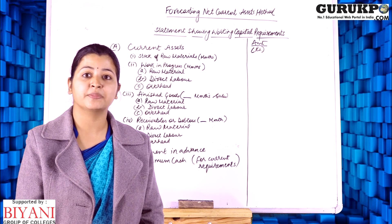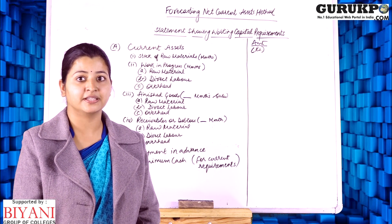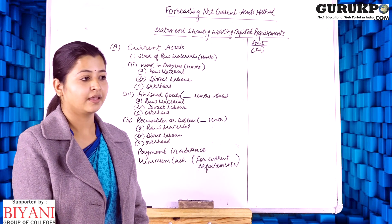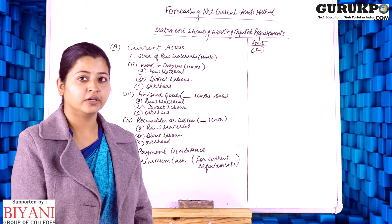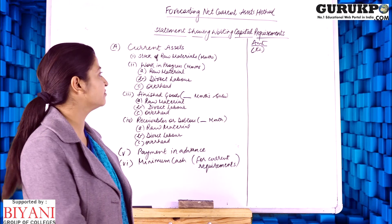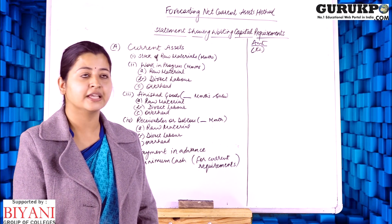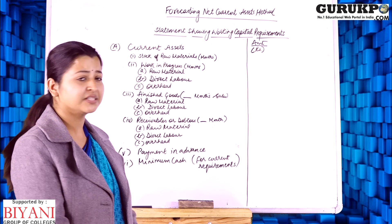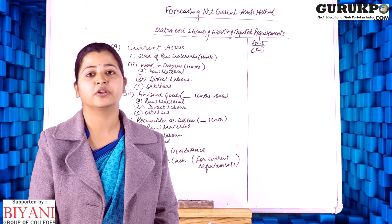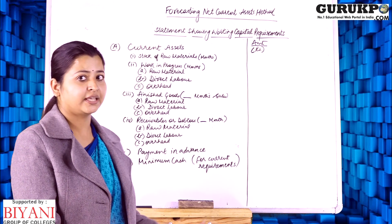First we have to estimate the current assets — forecasting current assets. We have to take various stocks; first we start with the stock of raw material, and we include the months, days, or weeks. This means that on the basis of the operating cycle, the stages or days involved in the operating cycle are taken in this method.